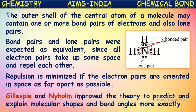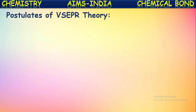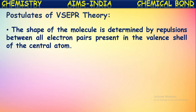Gillespie and Nyholm improved the theory to predict and explain molecular shapes and bond angles more exactly. The shape of the molecule is determined by the repulsions between all electron pairs present in the valence shell of the central atom. Based upon these electron pairs the shape and bond angles present in the molecule can be predicted.